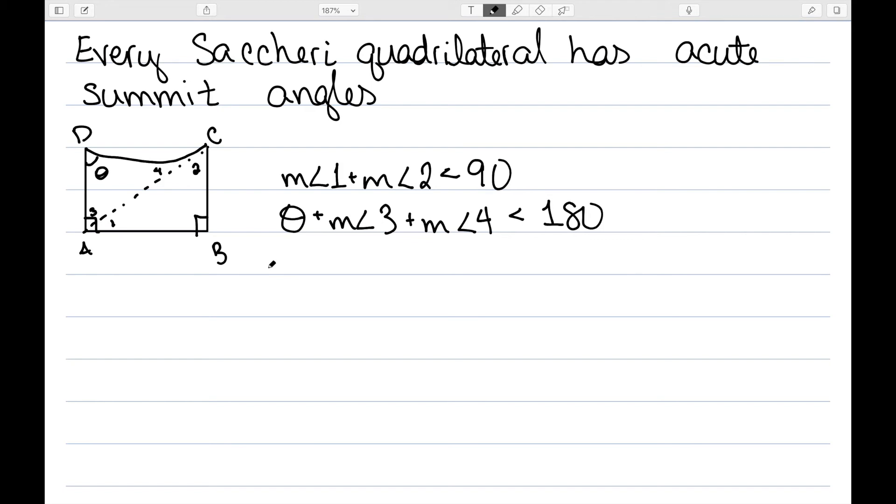If I add these two up, I would have measure of angle 1 plus measure of angle 2, plus the measure of angle 3 plus the measure of angle 4 plus theta is less than 270.